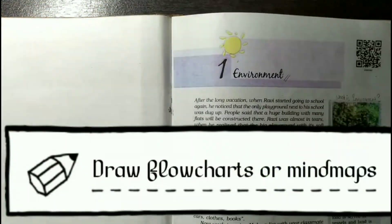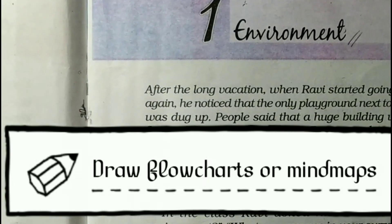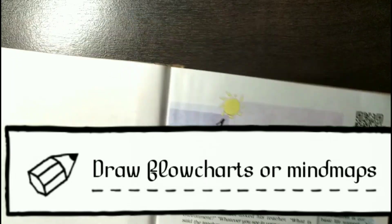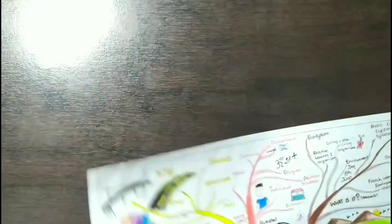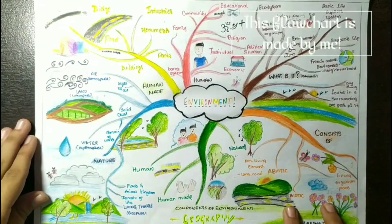Tip number five is drawing or creating flowcharts and mind maps. This is very easy for you. You can do this when you're free and you can draw it roughly.